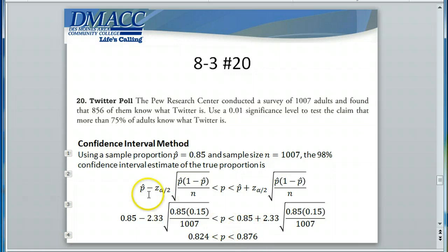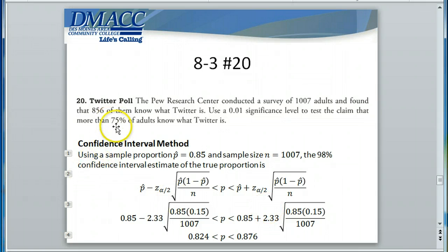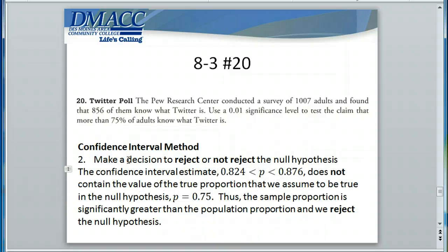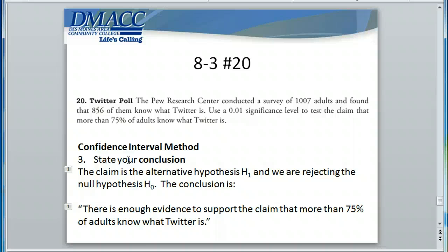Notice that what we assume to be true — that the population proportion equals 75% — is not in our confidence interval estimate of 82.4% to 87.6%. Therefore, our sample statistics tell us the sample proportion is significantly different from that assumed 75%, and we reject the null hypothesis. Because we're rejecting the null hypothesis and the claim is the alternative, we support the alternative. There is enough evidence to support the claim that more than 75% of adults know what Twitter is. That is a demonstration of all three methods.